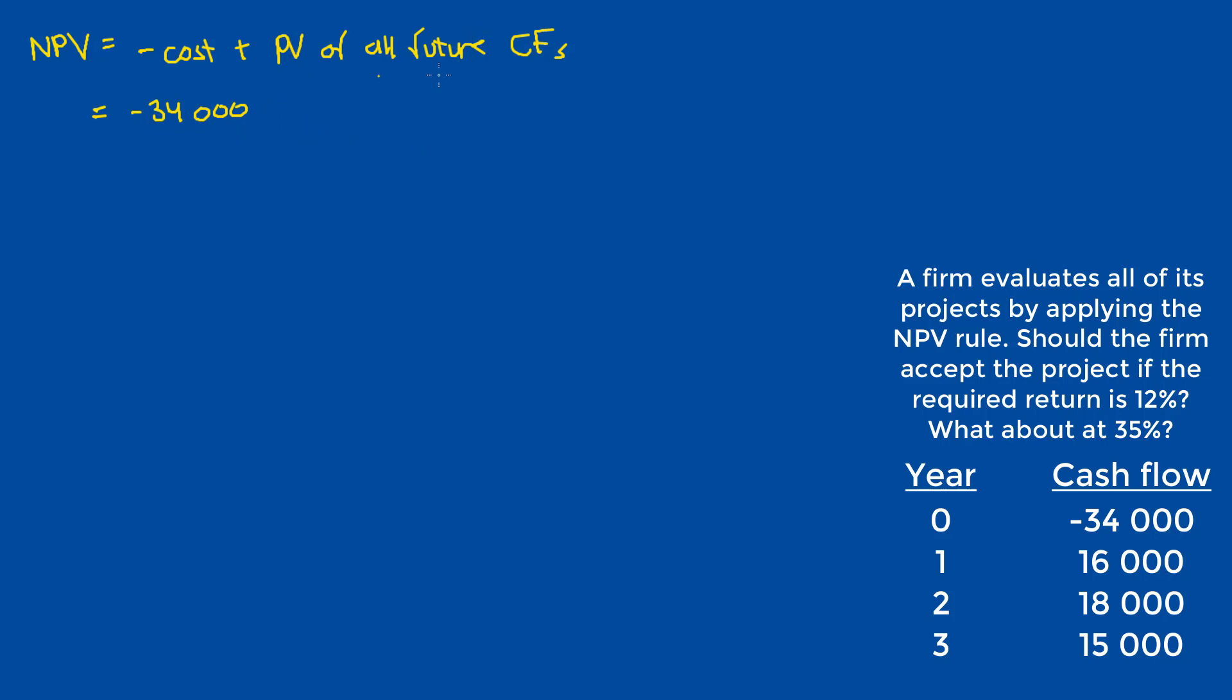The present value of all future cash flows we would get by multiplying each of the subsequent positive cash flows by the present value interest factor for that period. So we would have 16,000, which is our first cash flow, multiplied by 1 over 1 plus R raised to N. In this case, it would be 1.12 raised to 1, which is just 1.12, plus the next cash flow, which is 18,000 over 1.12 raised to 2, plus 15,000 over 1.12 raised to 3.